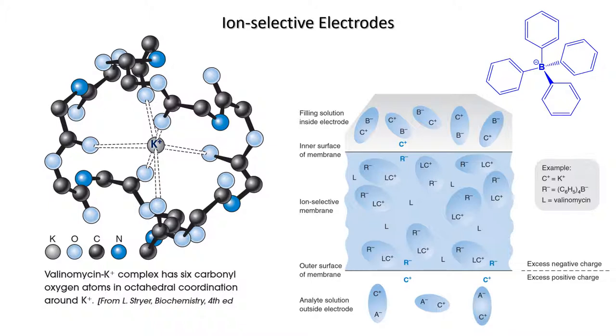The membrane contains a ligand which readily and preferentially complexes the analyte ion. The example of a ligand shown here is valinomycin, a ring-shaped molecule with inwardly directed oxygen atoms that complex potassium. The matrix in which the ligand is suspended is usually a hydrophobic polymer which rejects both water and water-soluble counter ions.